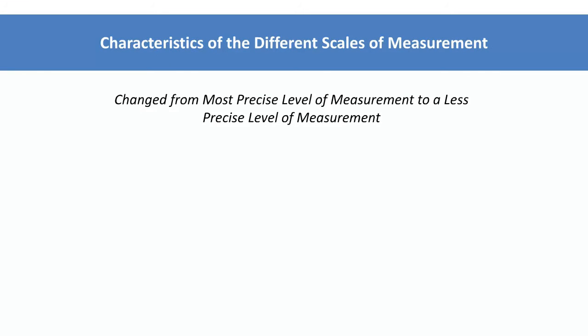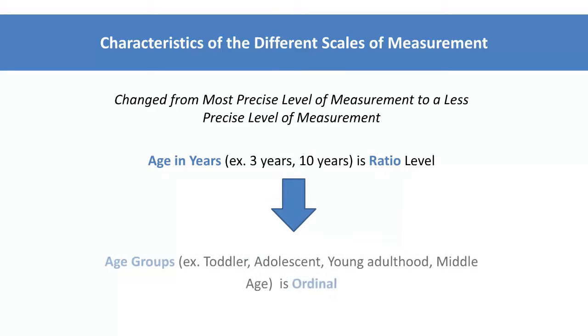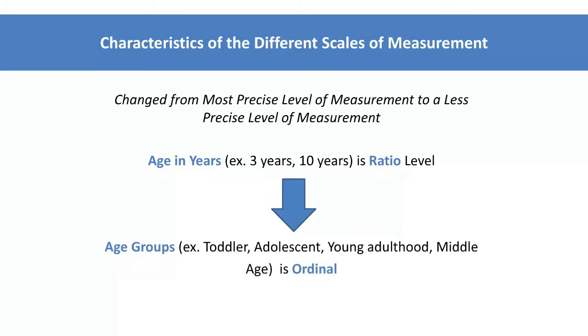It is also important to note that more precise data can always be scaled down to less precise data. For instance, a ratio level variable like age can be scaled into an ordinal variable of age groups, which could include toddler, adolescent, young adult, and middle-aged.